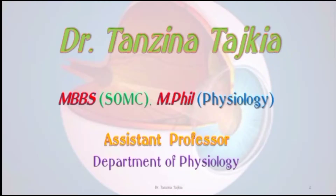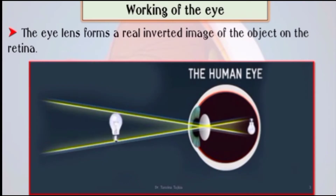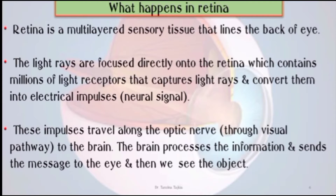Today's lecture is about the retina and its image formation. The lens forms a real inverted image of the object on the retina. The retina is a multi-layered sensory tissue that lines the back of the eye. Light rays are focused directly onto the retina, which contains millions of light receptors that capture light rays and convert them into electrical impulses called neural signals. These impulses travel along the optic nerve through the visual pathway to the brain, which processes the information so we see the object.